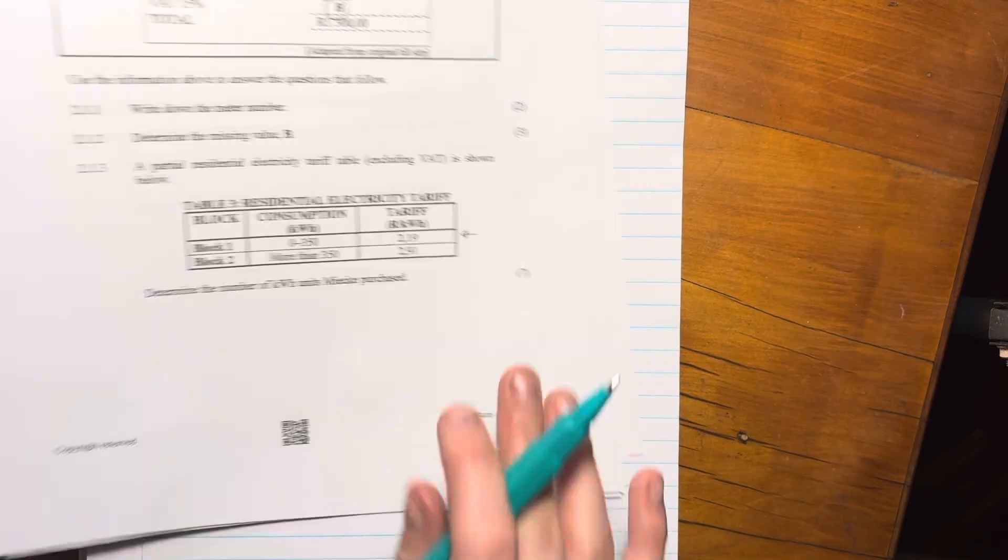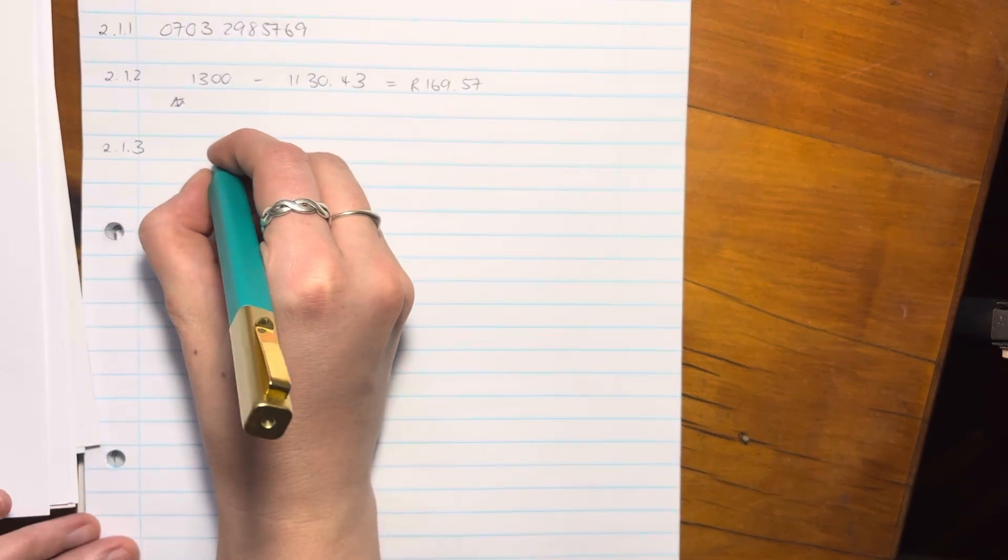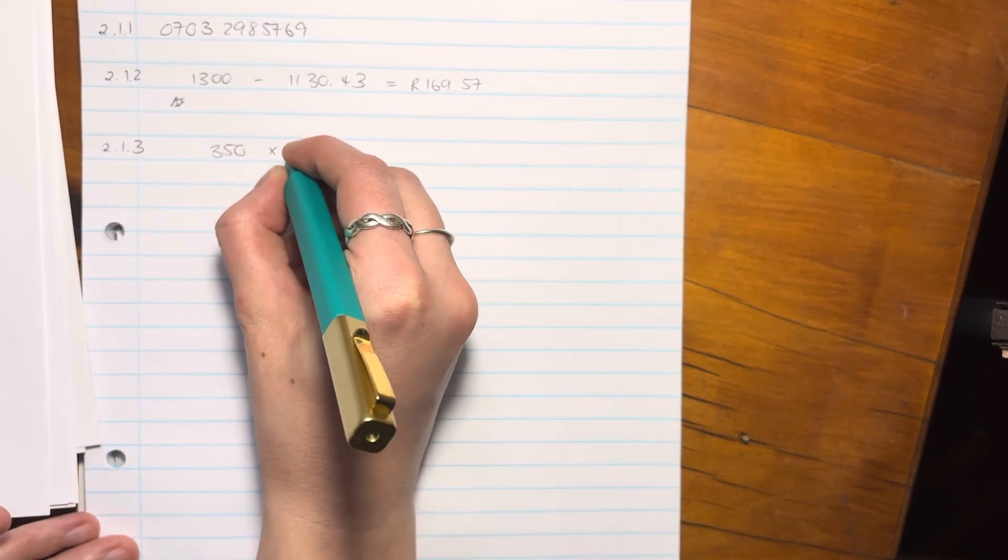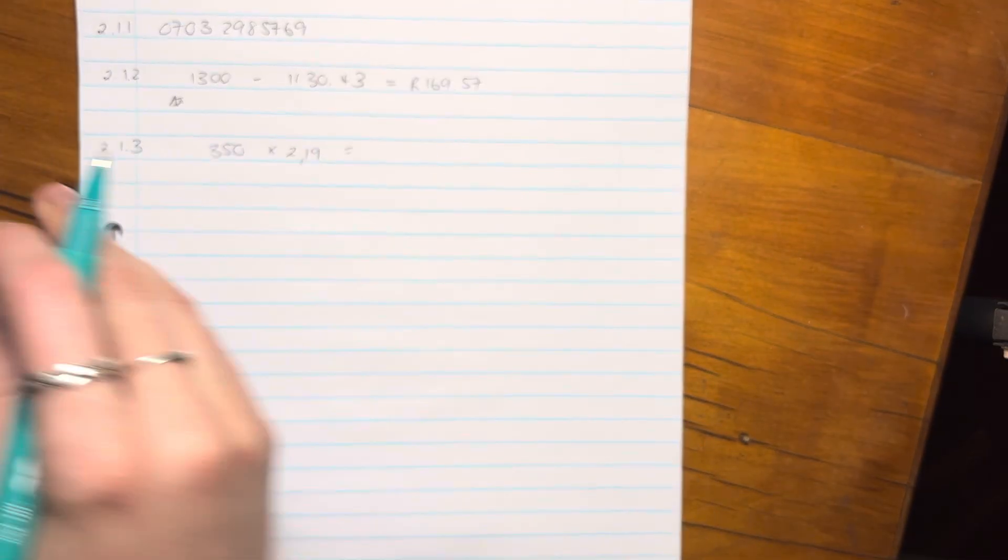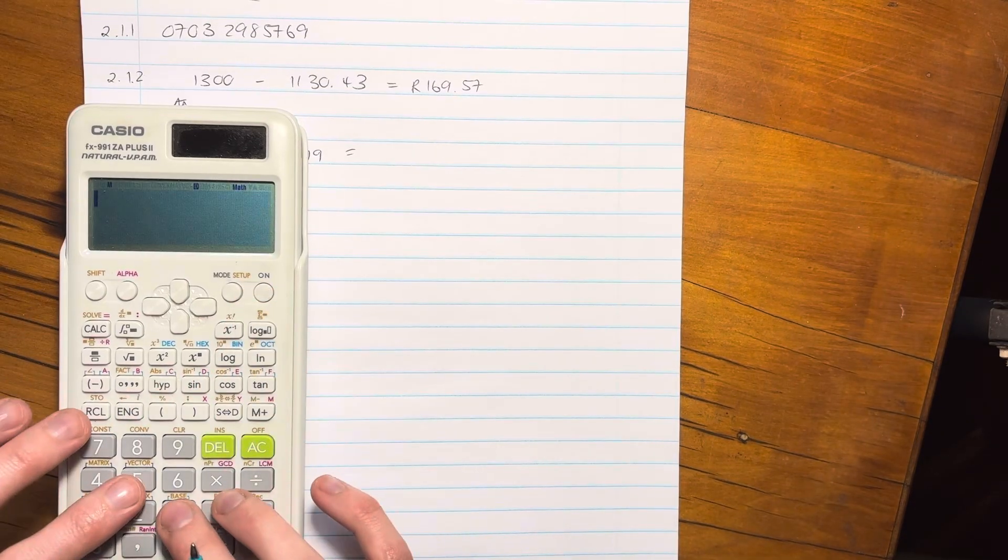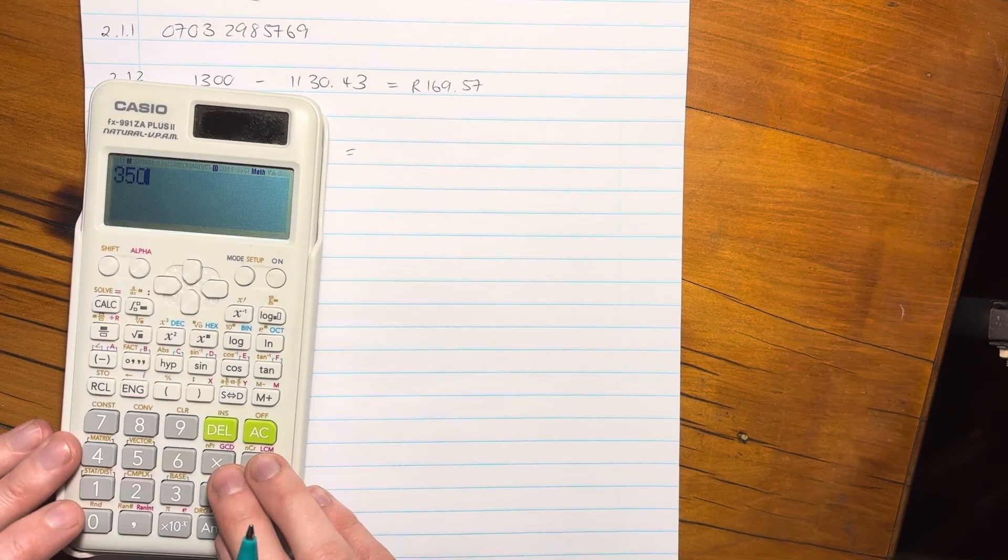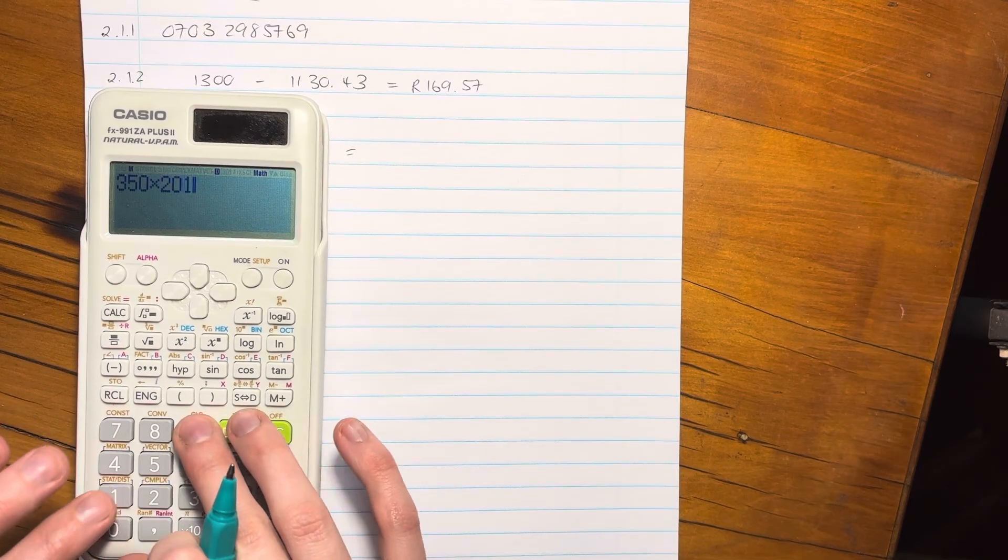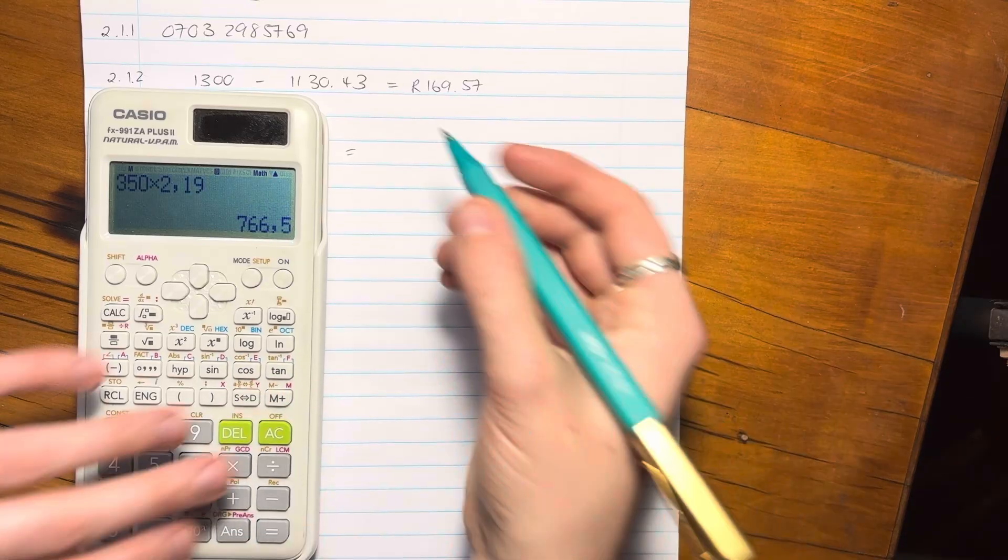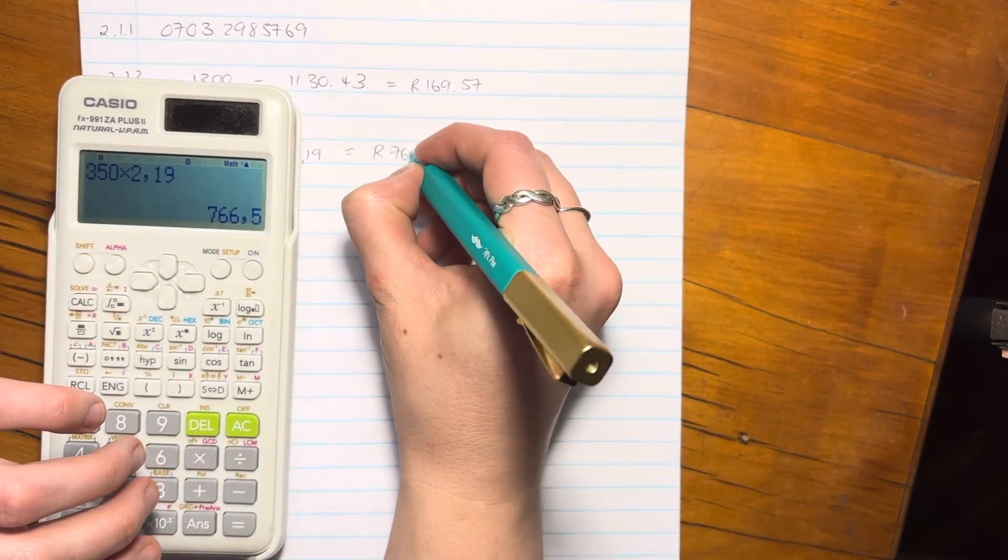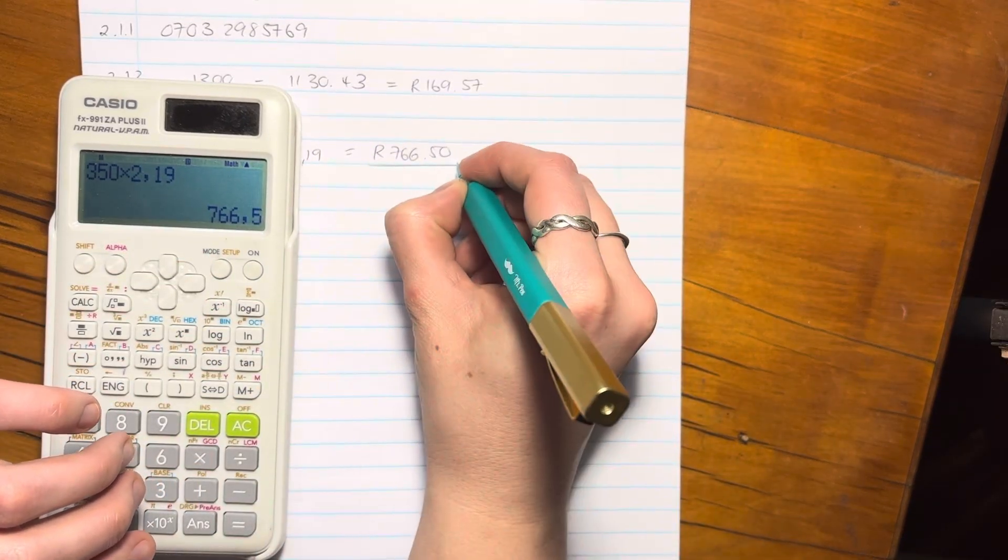It just gives us an indication. So you start by saying, okay, well, if she used 350 kilowatts and each kilowatt was 2.19 rand, how much would she have paid? So you say 350 times by 2.19. And that's how much she would have paid. So she would have paid that much. Okay.